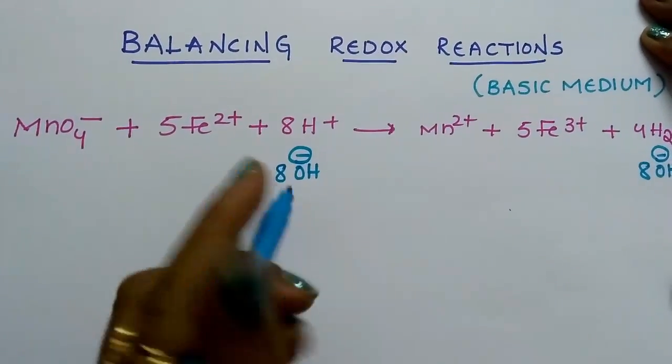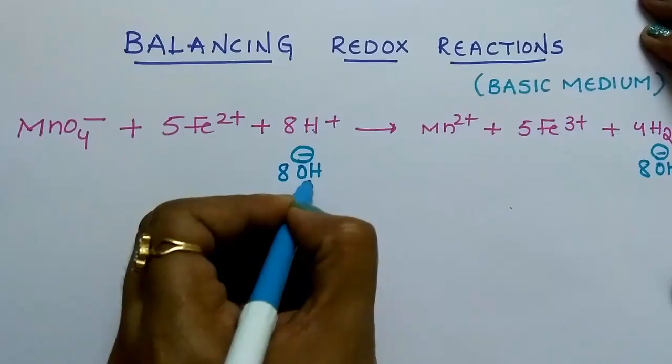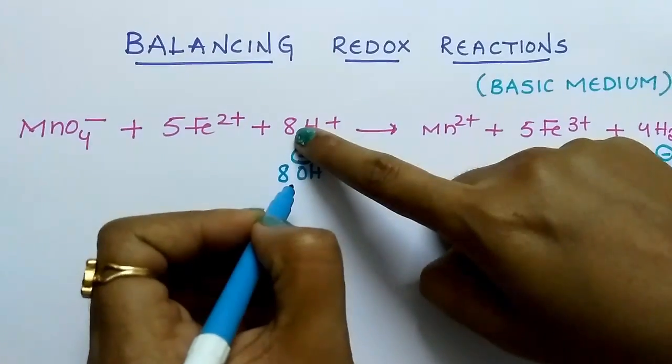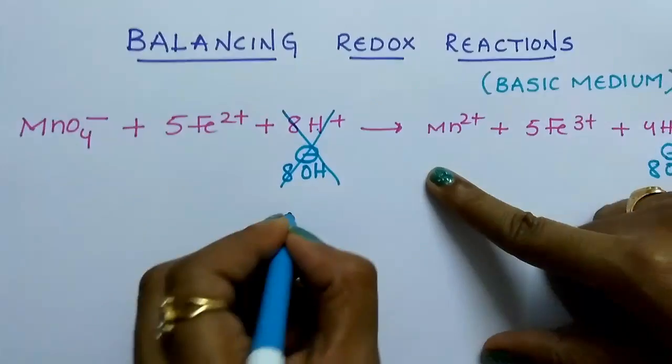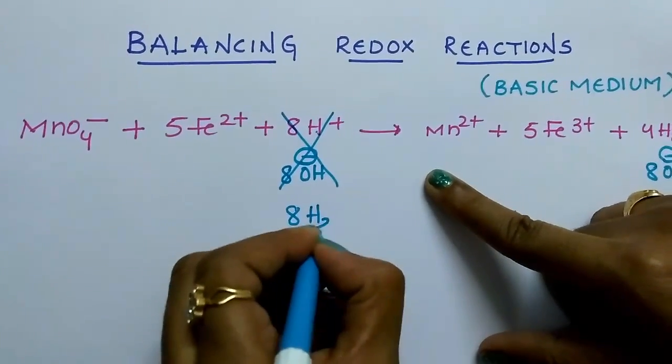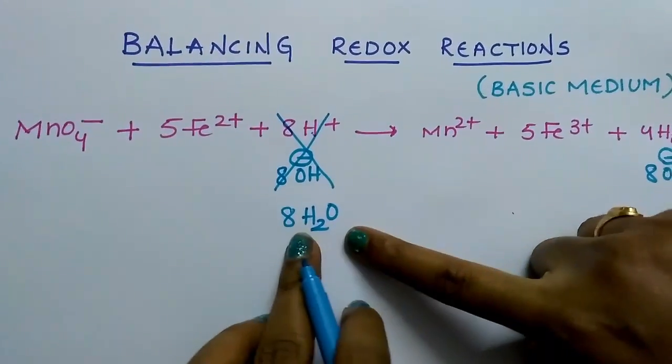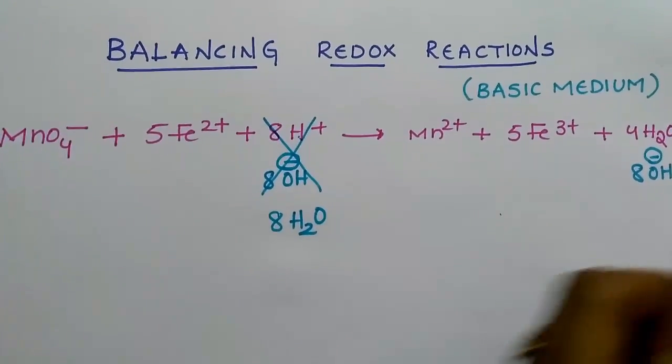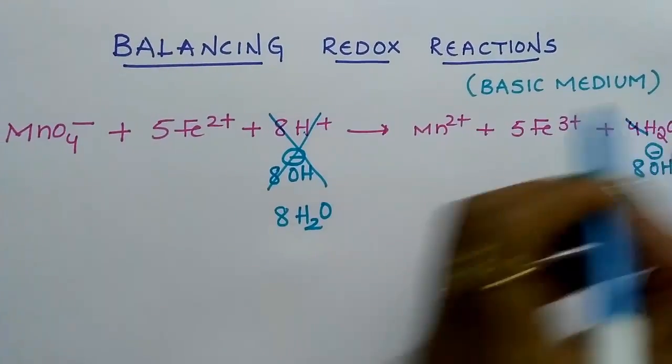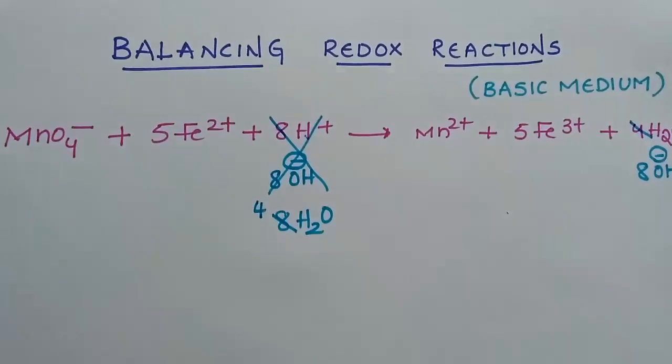After adding OH minus ions, now add H plus and OH minus. 8 H plus, 8 OH minus combine and we will get 8 H2O. This side 8 H2O is present, this side 4 H2O is present. So cancel this water molecules, then 4 will be left over.